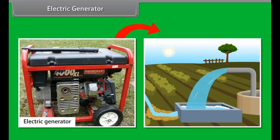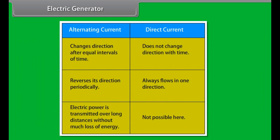If a magnet is spinning inside a coil, alternating current is induced in the coil. Alternating current changes direction after equal intervals of time. The other type of current is direct current which does not change direction with time.